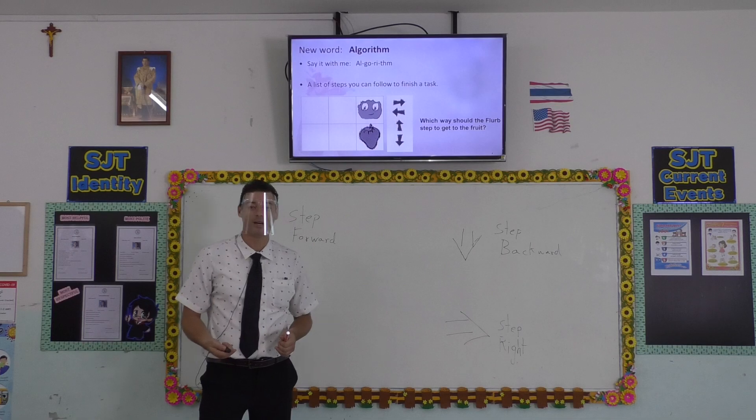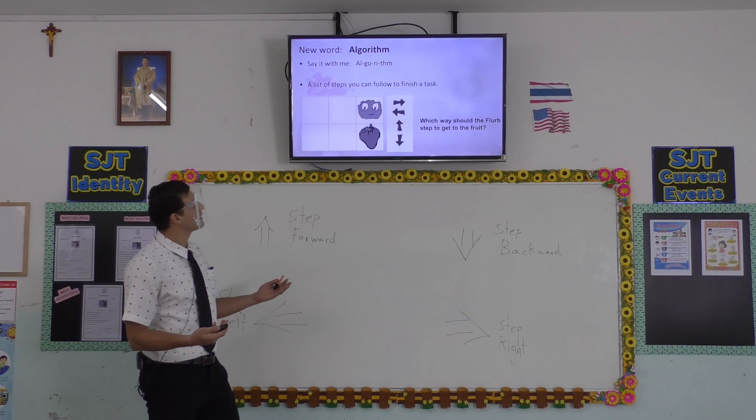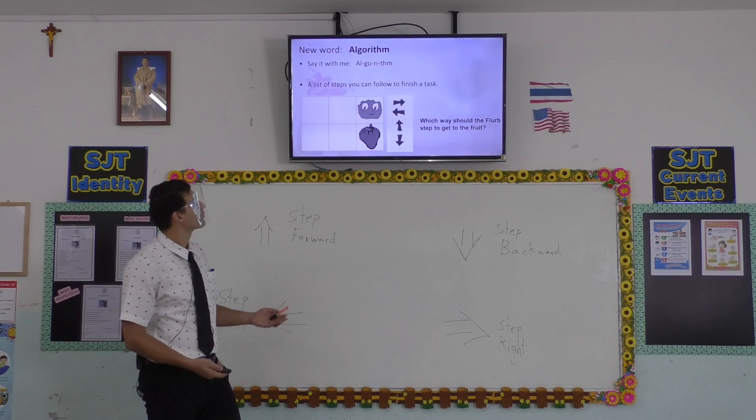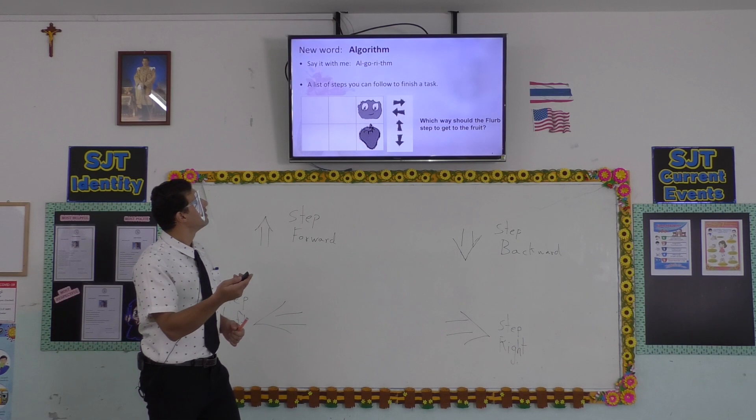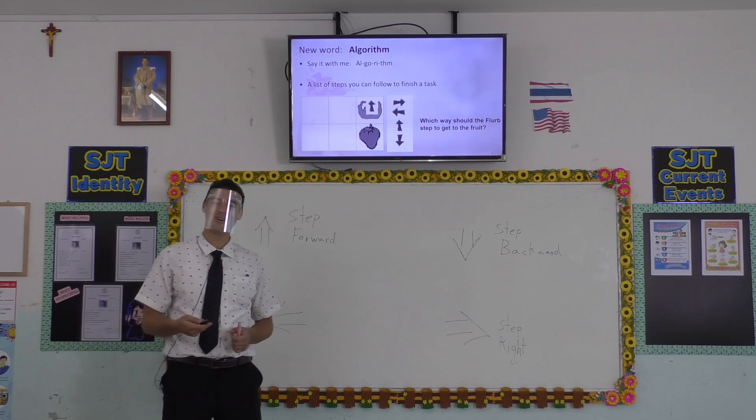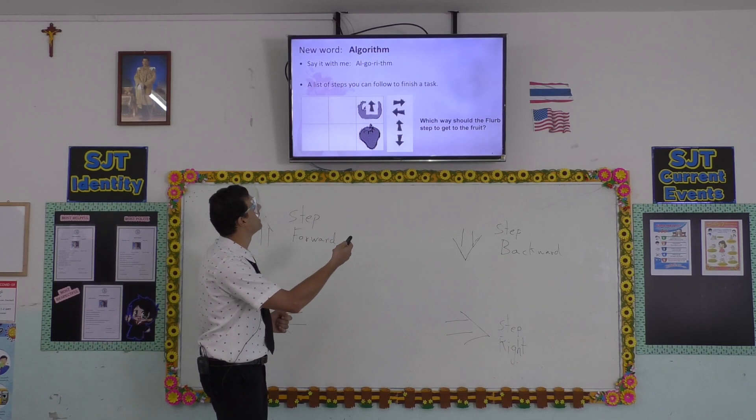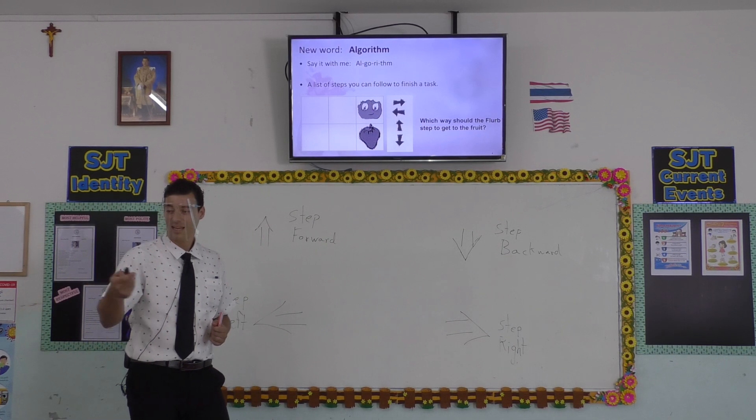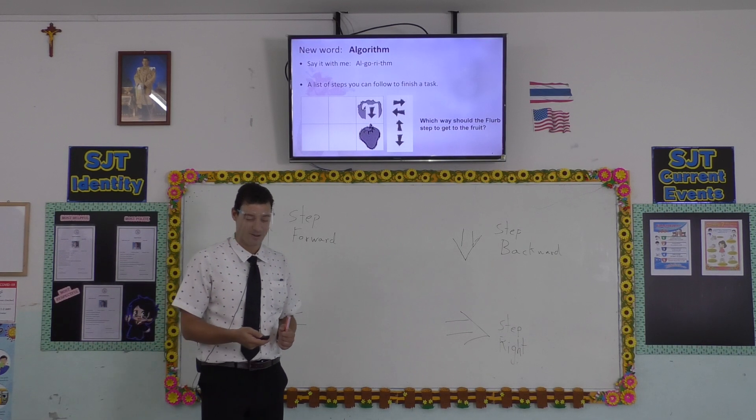Let's do another one. Which way should Flerb step to get to the strawberry. Anna? Step forward. Oh no. That will go up, right? Chasey? Step backward. Very good.